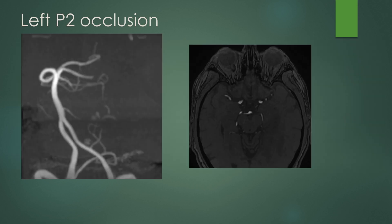On the vascular imaging source images, you can see the right PCA, left PCA, and an abrupt cutoff of that distal left P2 segment. Better seen on the MIP images, you have abrupt cutoff of that P2 segment, which is the occlusion.